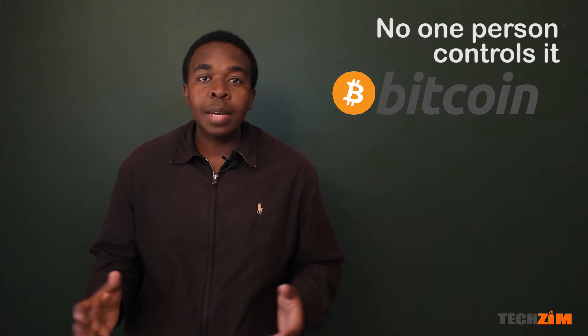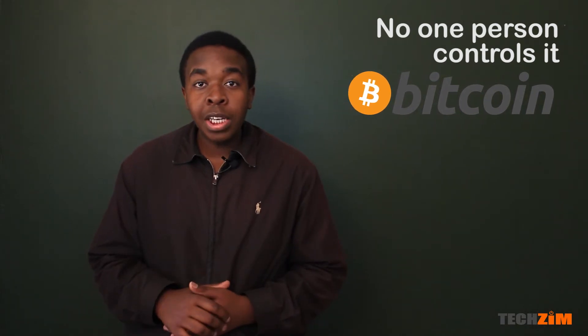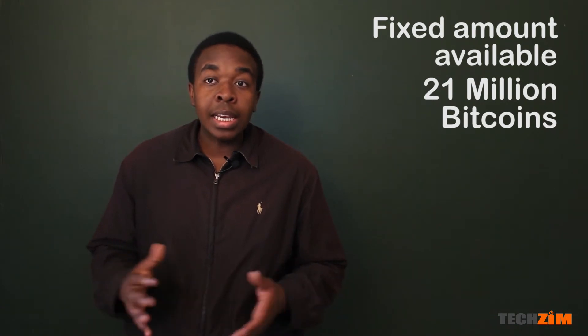Now with Bitcoin, it's decentralized, meaning that no one controls it, and people love that. People value it because of that. They know that no one can just wake up and print more, which is another value point of Bitcoin. There's a fixed amount which was set by the creators, so there will only be 21 million Bitcoin ever circulating unless they change it.